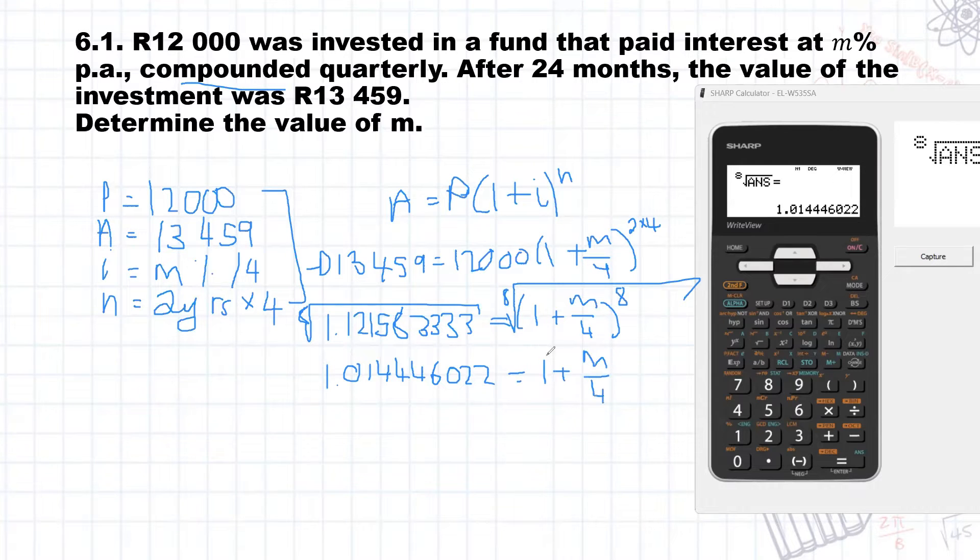Now the furthest thing away from M on the side is the one, so we subtract one on both sides. So what we've got here is just 0.014446022. I know it's tedious to write, but it is important to show that you are carrying accuracy. It equals M over four. The last thing that we need to do to get M by itself is multiply both sides by four. And what you do to one side, you do to the other side. So M is by itself now.